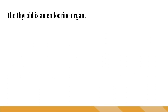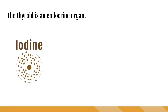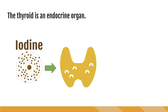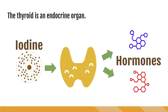Endocrine organs are organs that create, store, and secrete hormones directly into the bloodstream. This is opposed to exocrine organs that use ducts to transport substances. The thyroid is the only organ that metabolizes iodine, and it uses iodine to produce hormones. These hormones regulate the growth and development, metabolism, and other functions of the body.